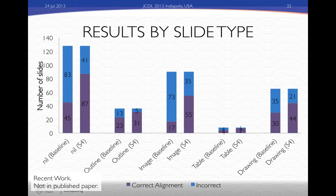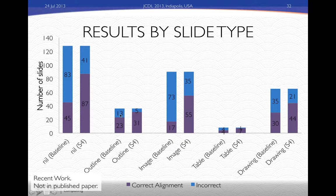When we look at specific types of slides, we can see how good the improvements are. For nil slides, seen in the left-hand column, the baseline system gets most of these inaccurate — 83 out of 128 cases are incorrectly classified. With our multimodal system, we get about half of those errors corrected. Similarly, outline slides improve, image slides improve a lot, and drawing slides also improve a little bit.